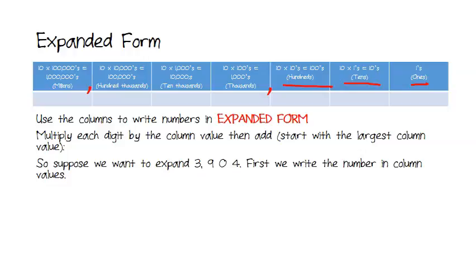Supposing we wanted to expand 3,904. First, we write that number in the column values. And remember, we always start with the smallest column value, that is the one to the right, the ones column. And that's a 4. Then we go on here to the 0, write that in, 9, and a 3.